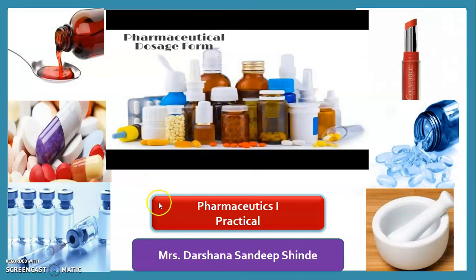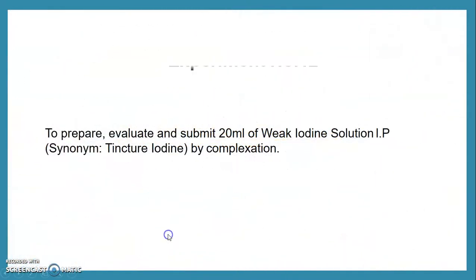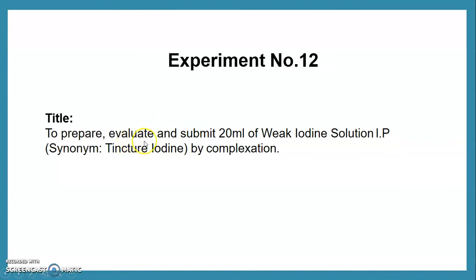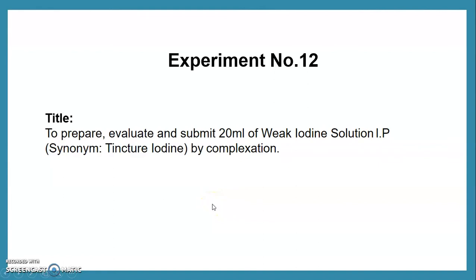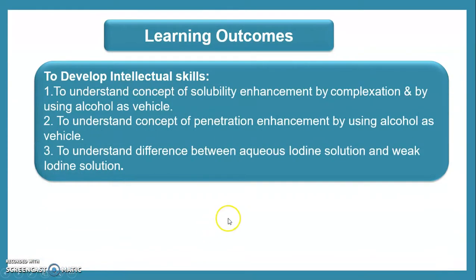Welcome, dear students, to another session of Practical Pharmaceutics. In this session, we see experiment number 12: to prepare, evaluate, and submit 20 ml of Weak Iodine Solution IP by complexation method. The synonym of today's preparation is tincture iodine. In this experiment, we prepare the solution using the complexation method, which makes an insoluble ingredient soluble in the vehicle.